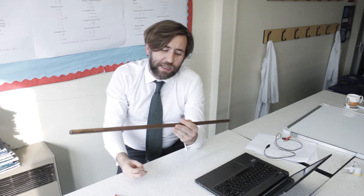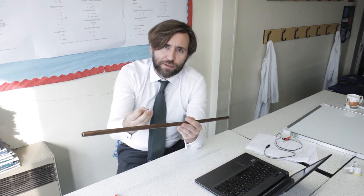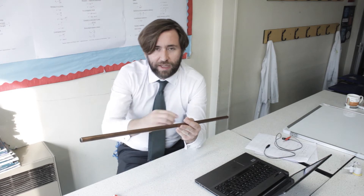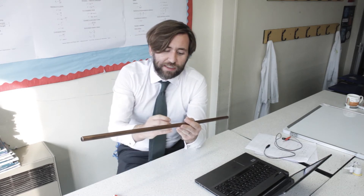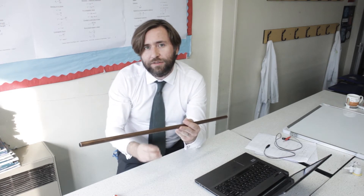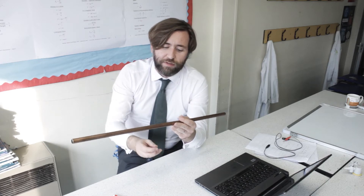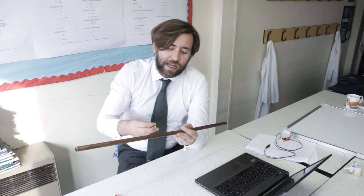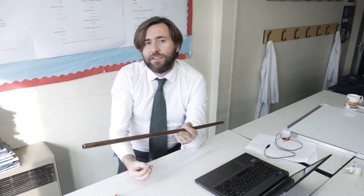Faraday's Law says that when a conductor moves relative to a magnetic field it produces a current, or induces an EMF, and that EMF then causes a current. The EMF produced is proportional to the rate of change of flux linkage. You've got to imagine this conductor moving through that flux, and the faster it moves relative to the flux, the greater the EMF produced.